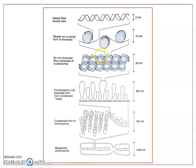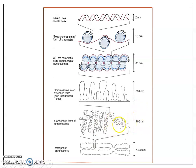Till the chromatin stage, we have the 30-nanometer fiber. The chromosome in its extended form has a thickness of 300 nanometers — about 10 times that of the 30-nanometer fiber. During cell division, when the cell enters the dividing stage, the 300-nanometer loops further coil to form the condensed form of chromosome. The thickness increases to 700 nanometers and the length of the DNA is highly reduced.